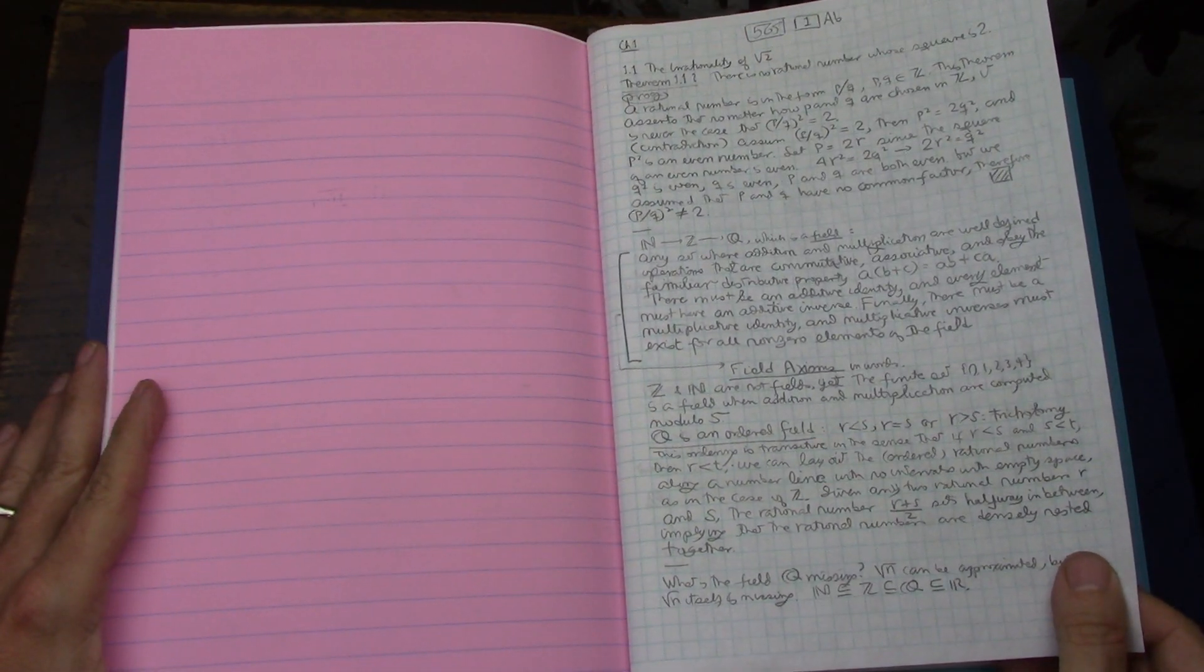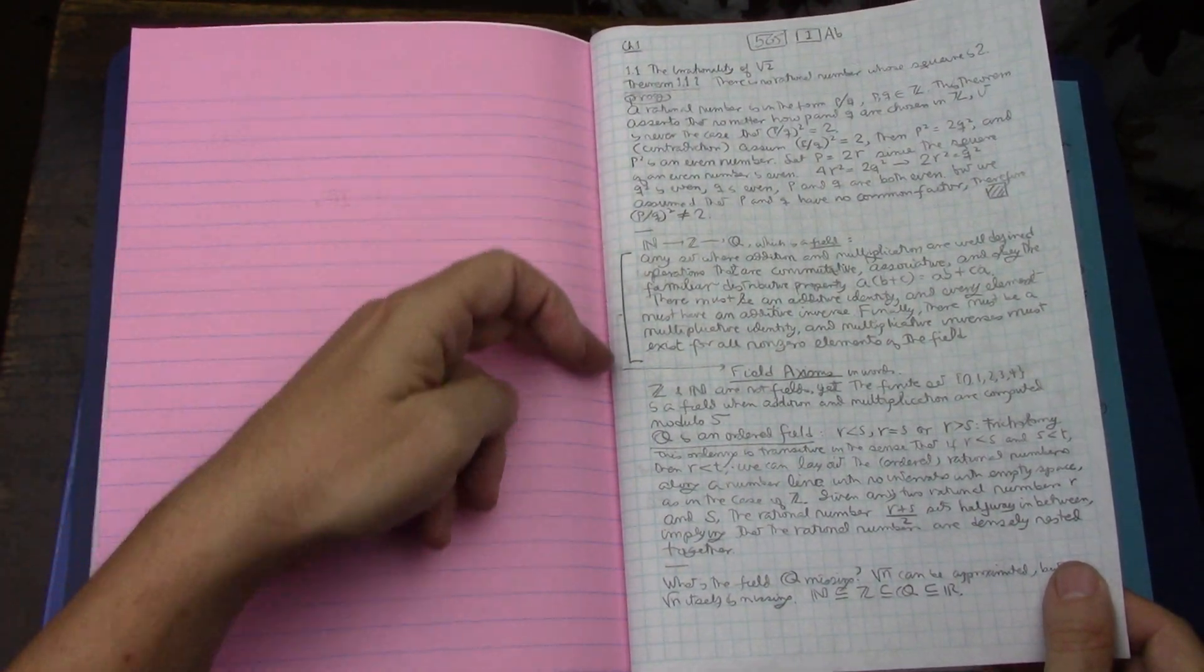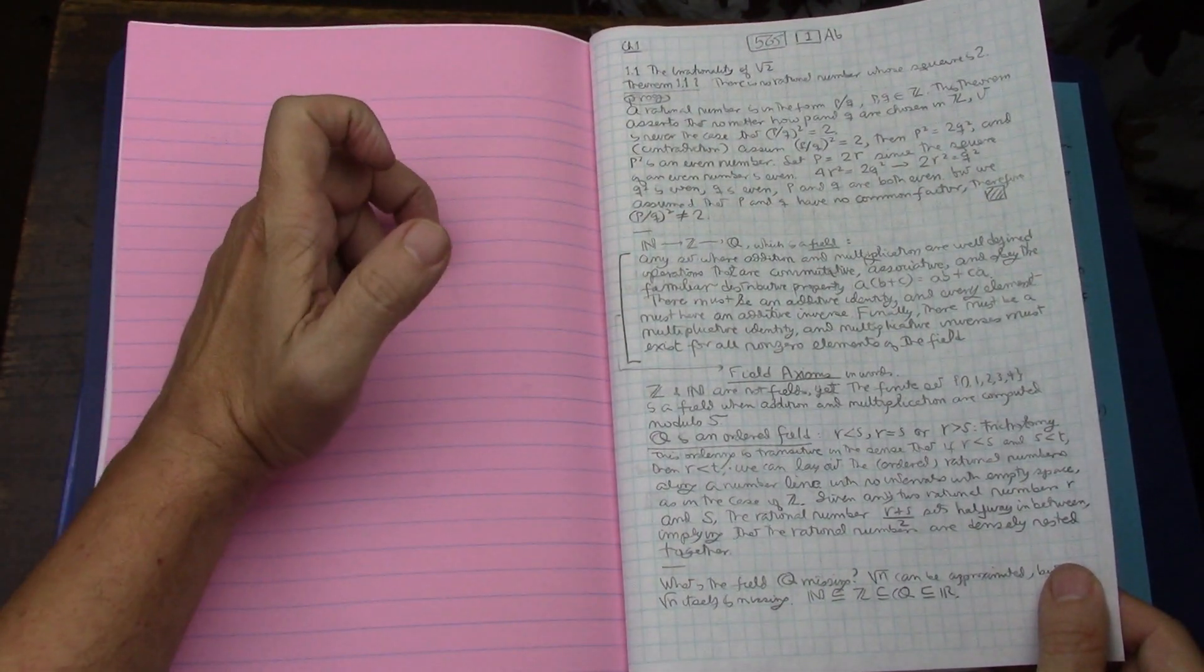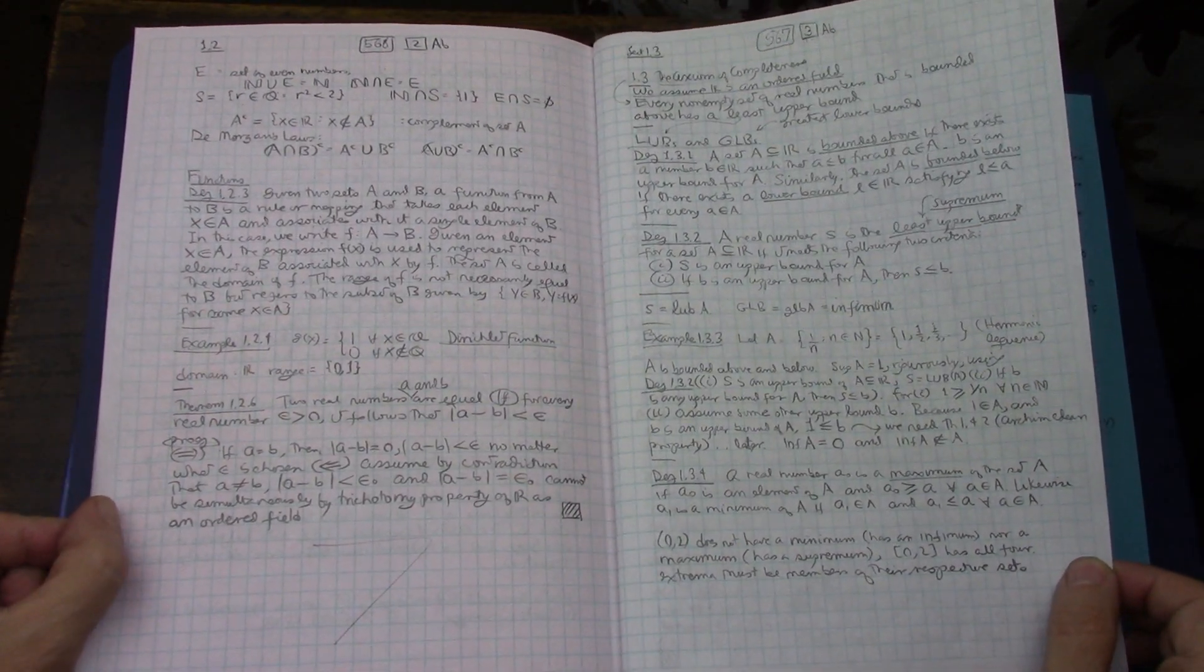Because by the time I get to Abbott, I've already read the same concept three or four times. And so I'll either write it out because it's done in a different way that I like, or just to remind myself, if I don't remember from off the top of my head.